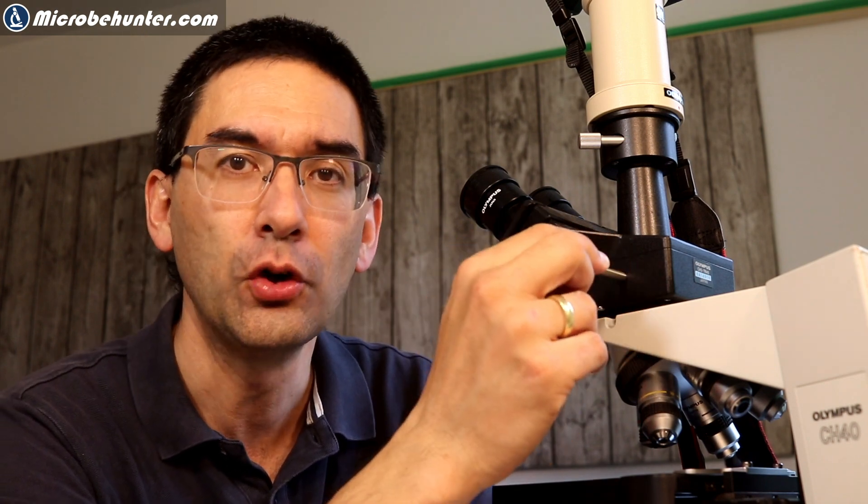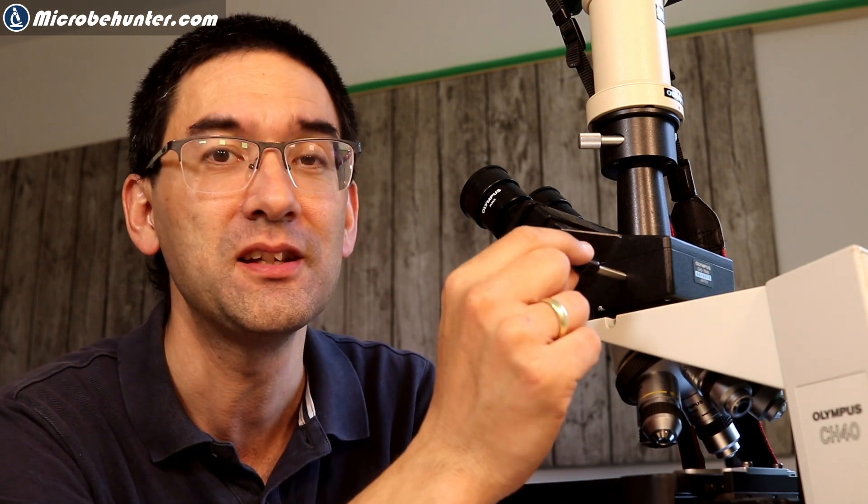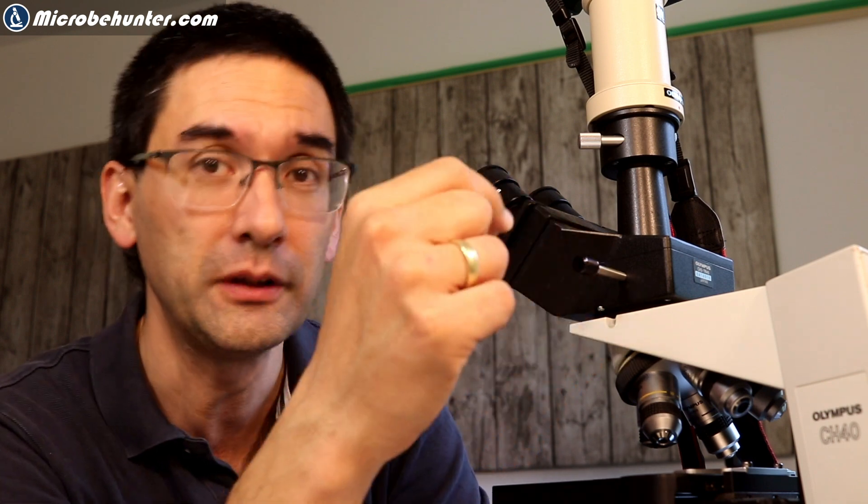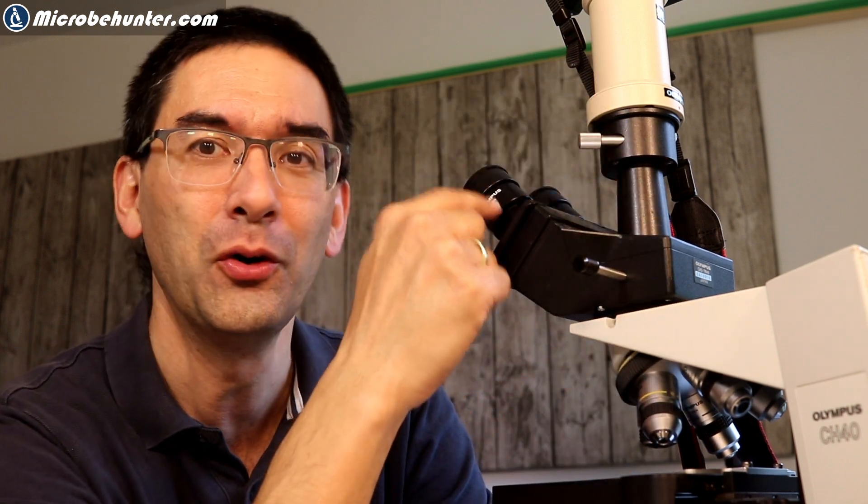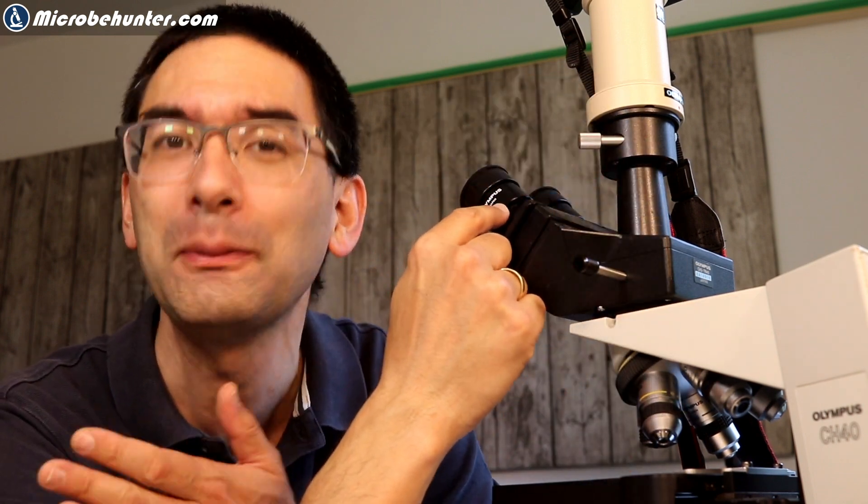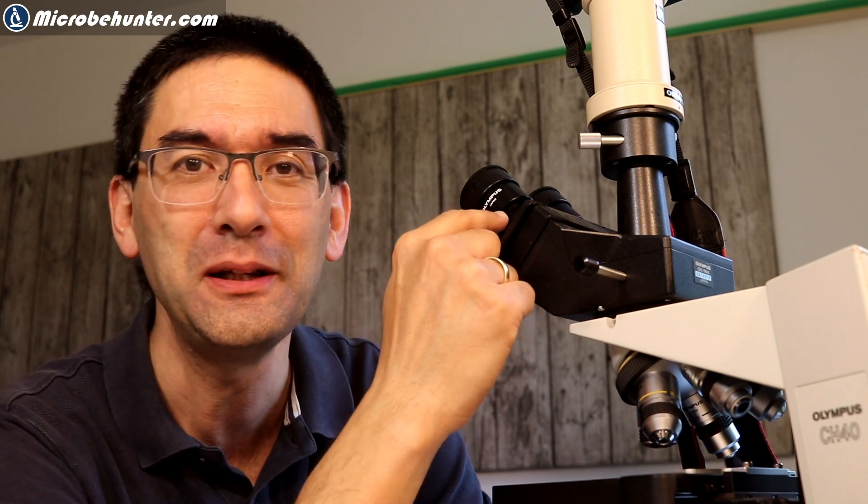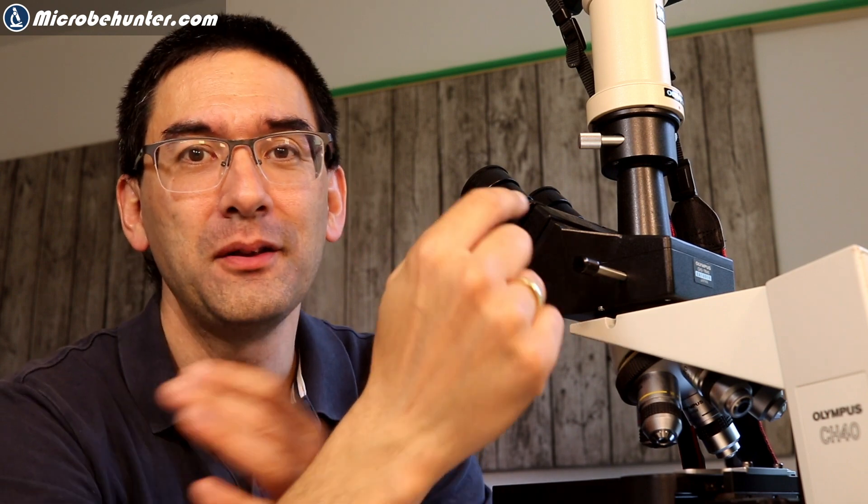Now very high-end microscopes, sometimes what they even have is a third setting where you can even pull it out even further or push it in even further. We then essentially have all of the light, 100% of the light, going now to the camera and zero to the eyepieces and the eyepieces are completely black. So even that is a possibility.